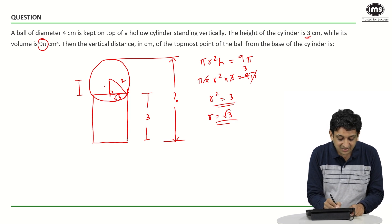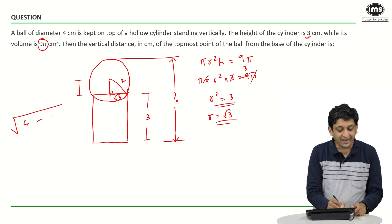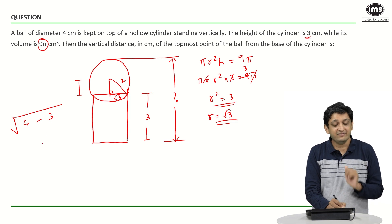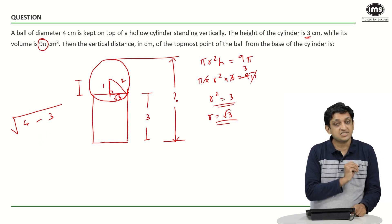So we can say that this third side that we have will be nothing but root of 2 square hypotenuse square that is 4 minus root 3 square or 3. So root 4 minus 3 will be nothing but root of 1 or 1 unit. So I know that this distance is going to be 1 unit.